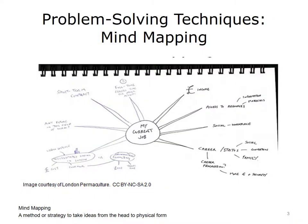Mind mapping is the name given to a method or strategy that makes it easier to put thoughts into graphic form or to map your ideas. In short, mind mapping is a sketching or drawing that takes ideas from the head and puts them into a physical representation. The image on the slide looks like doodling, and maybe in a way it is. However, this type of doodling can be quite helpful in representing different aspects of the project to members of the team.